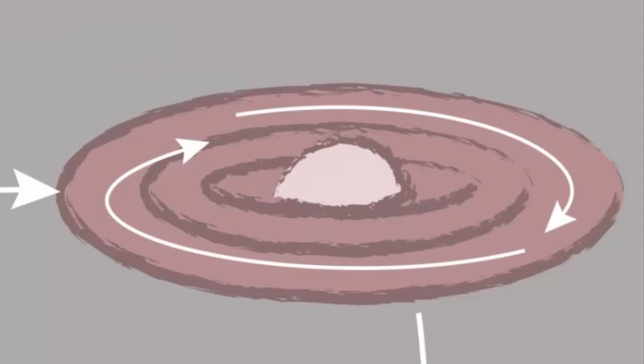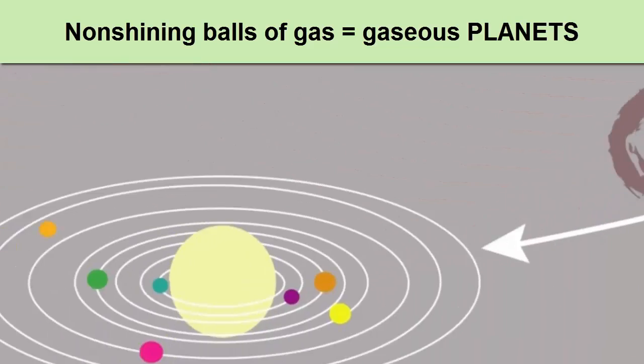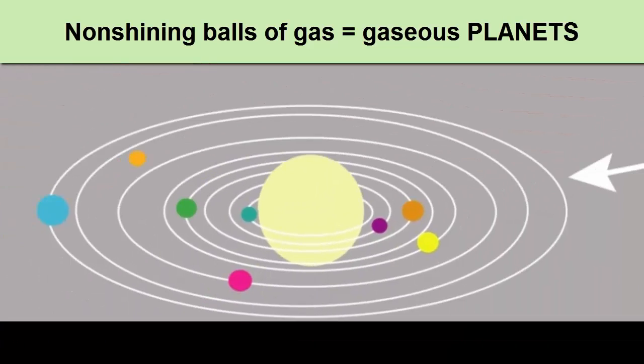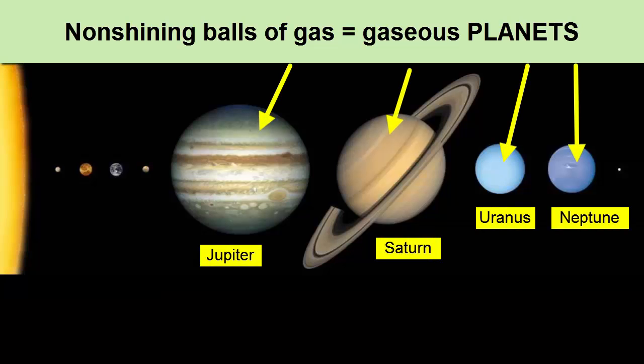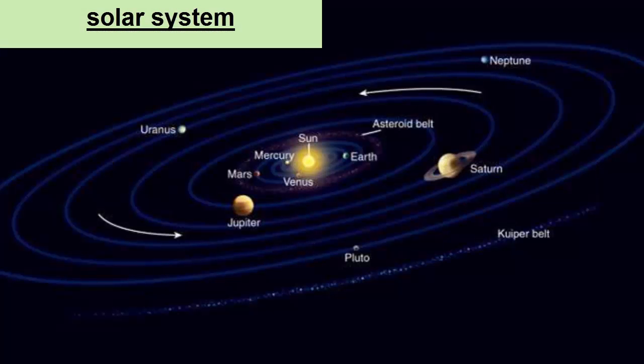Back to the rotating disk. Gas that is not part of the center star can go through similar collisions and accretion and create smaller, non-shining balls of gas that orbit the larger center star. These smaller balls with no nuclear fusion are called gaseous planets. The combination of a star and its orbiting planets is called a solar system.